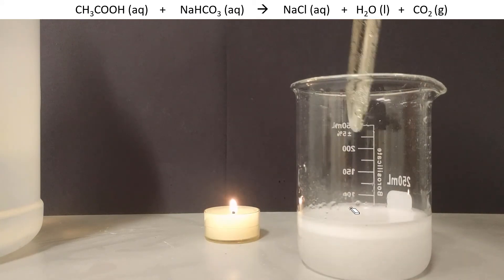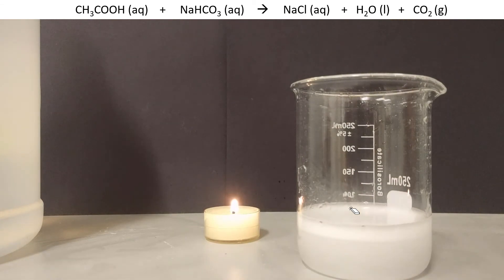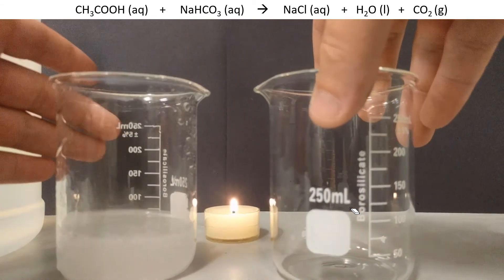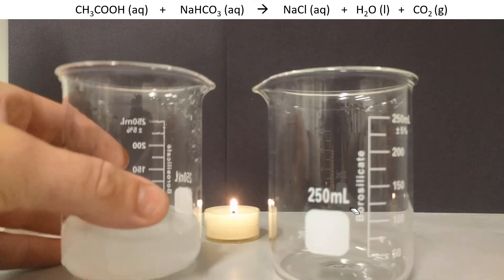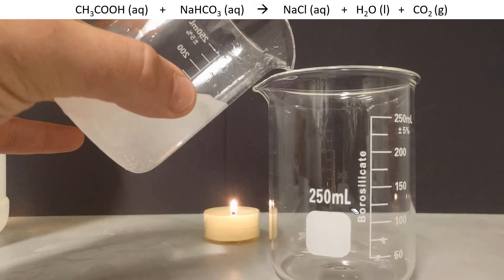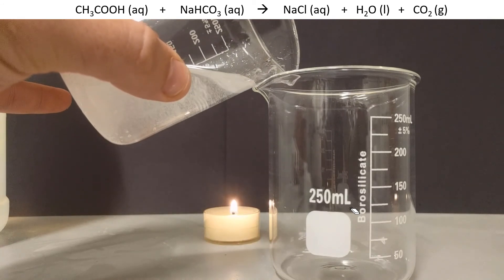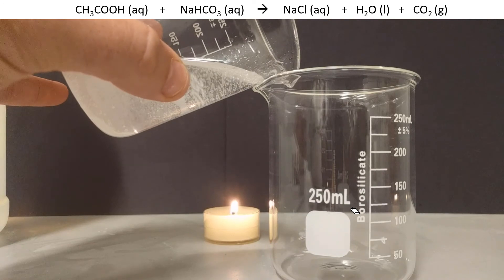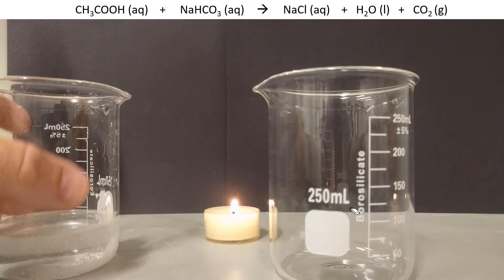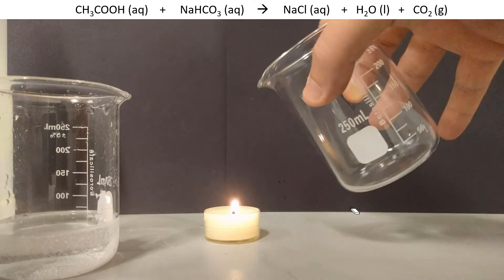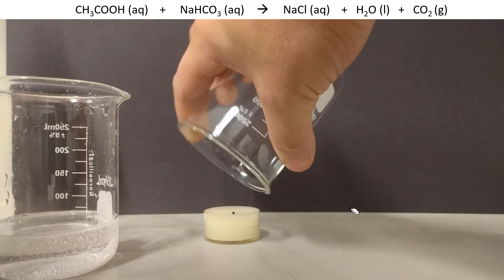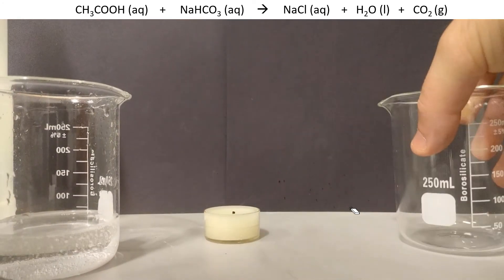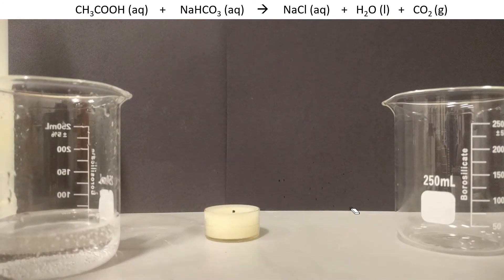Well, I can pour the air off of that beaker into another beaker. And I'm going to be careful not to pour any of the liquid out. I just want to tilt it over the other beaker so the air can flow out. Carbon dioxide is heavier than the rest of the air, so it will actually sink into the beaker and displace the air. So now I got an empty beaker, but it's full of CO2. So when I pour it over a candle, it smothers the flame. I think it's pretty cool.